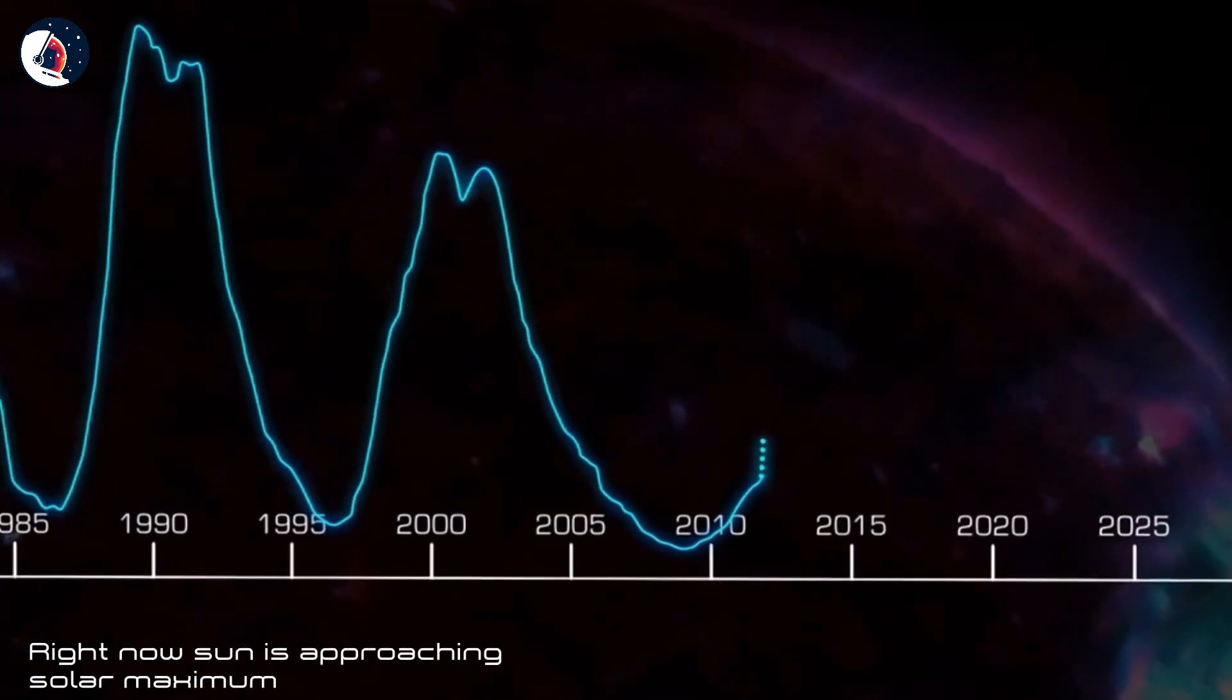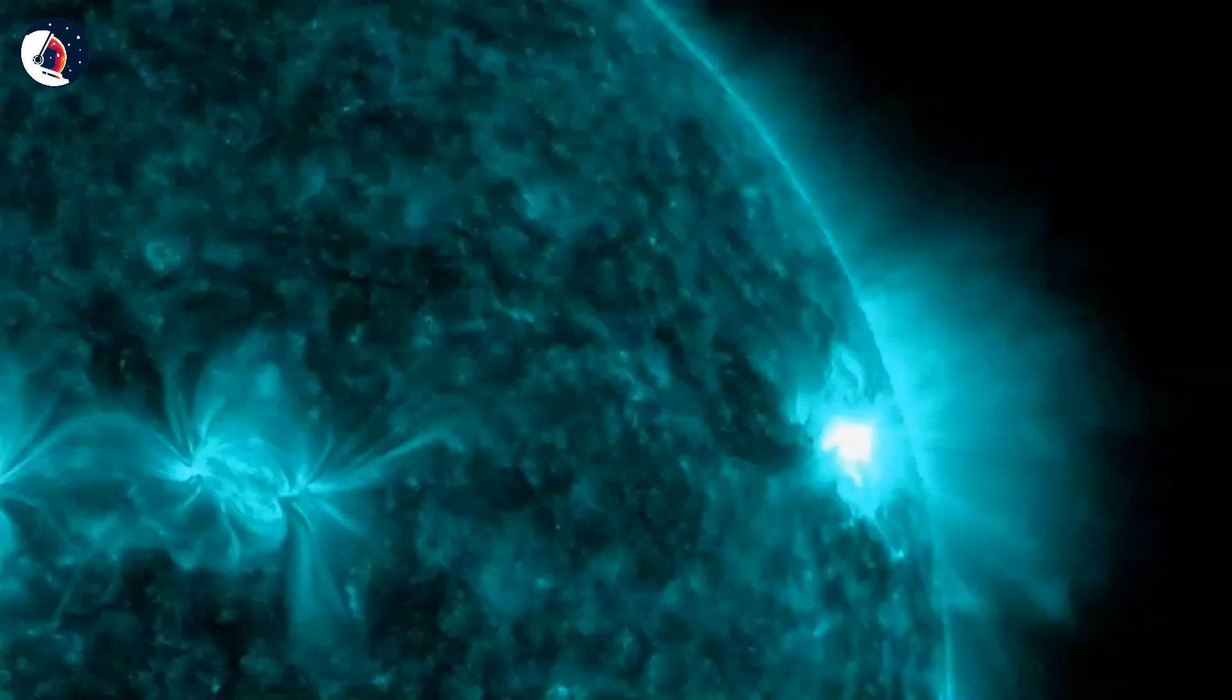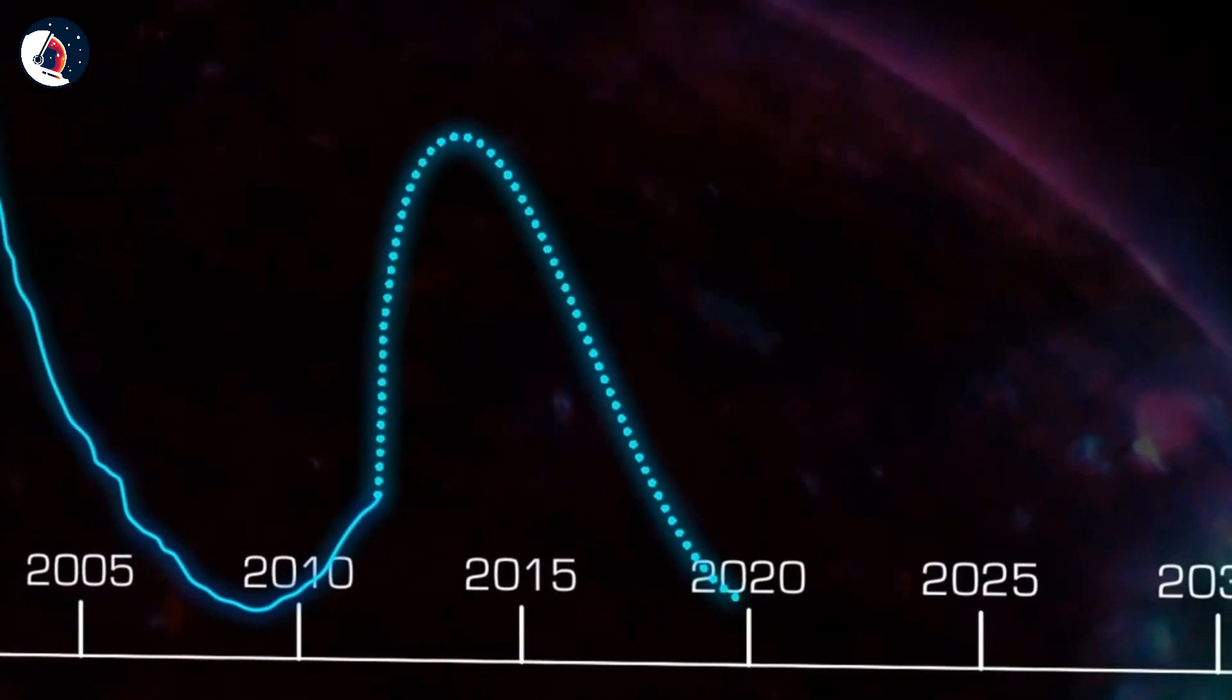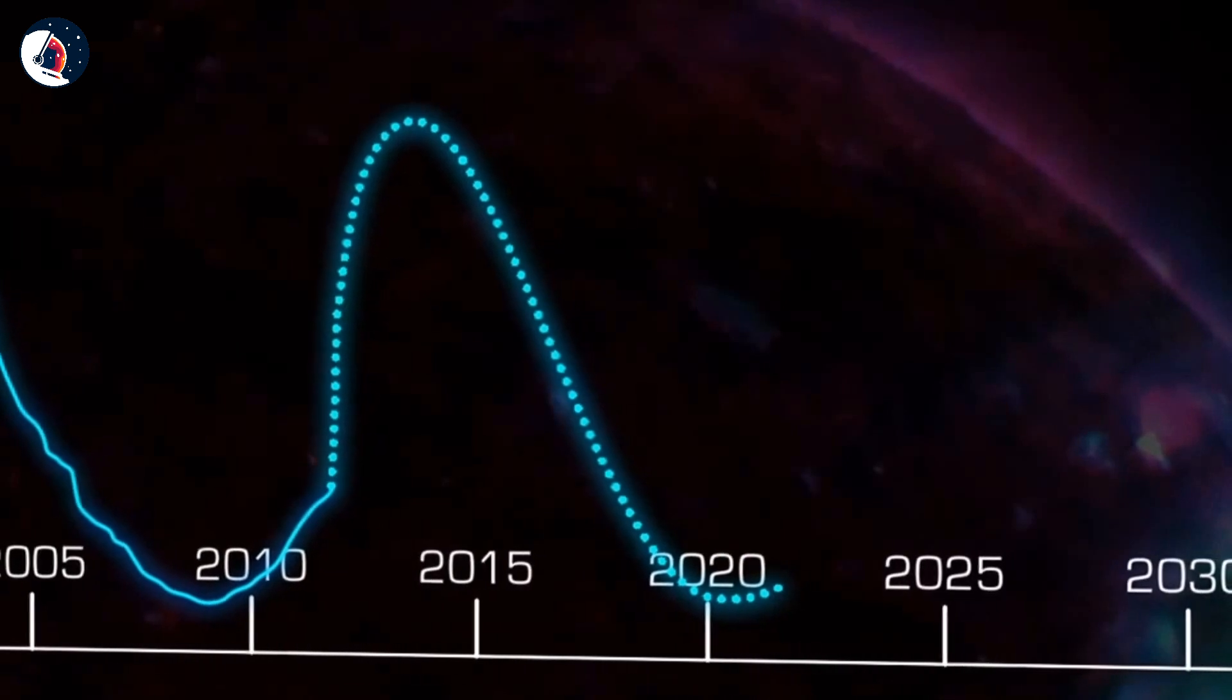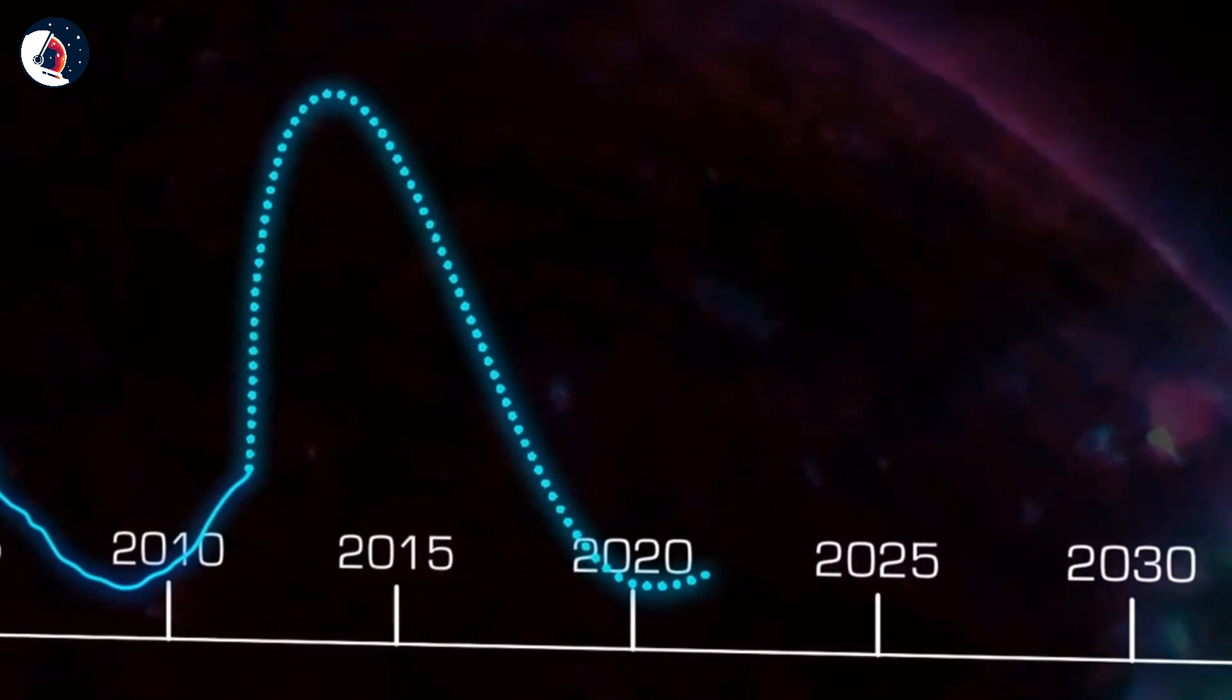Right now, the sun is approaching solar maximum, so flares and CMEs are more common than they were a few years ago. This cycle may peak in 2013 or early 2014 and should reach its minimum around 2020, although predictions about the sun are still uncertain.